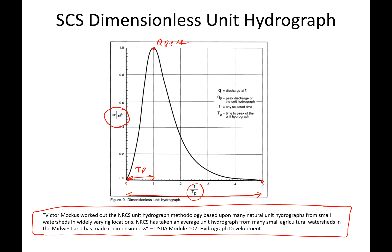In the literature there is not much information available on which watersheds were used, their locations, or how many were used. One key thing to note is that these were small watersheds, but today the SCS dimensionless unit hydrograph is used for all sorts of watersheds — not just agricultural — and of all different sizes. The figure shown came from a USDA report, and a link will be provided for further reading.